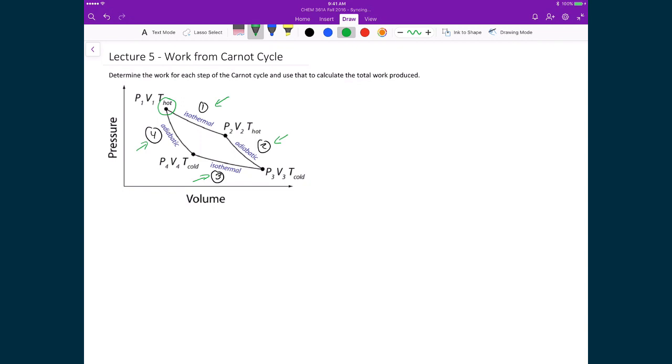And through this, we have this region that's enclosed by the four lines, and that region is going to end up being the work that's generated by this cycle. And so by calculating what is the area under each of these curves, we can then add that up, and what we'll end up in the end is the total work of the Carnot cycle.